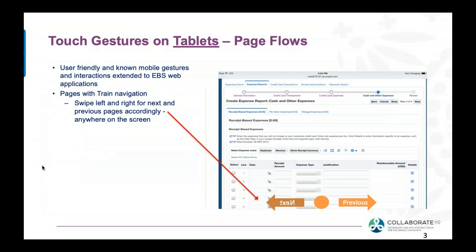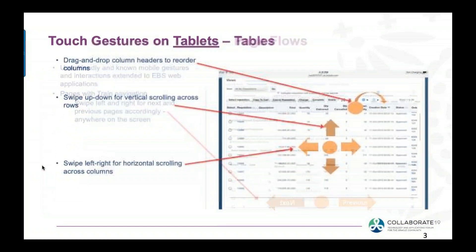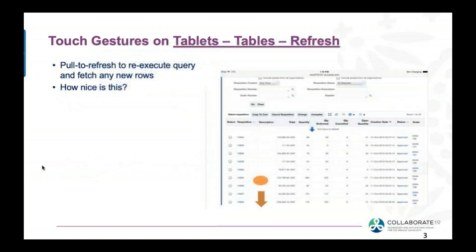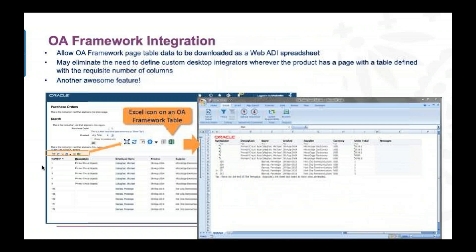Tablet gestures: when you're on a tablet, you can scroll left and right using your finger, scroll up and down, and actually hold a column and move it to reorder. To do a query, you just pull down with your finger and it will refresh. Also very cool — you can click on the Excel icon and it will actually render your on-screen data in Excel. You get one little pop-up window, you acknowledge it, and boom — it's in Excel.